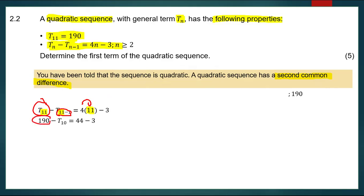Transposing 190 to the right-hand side gives negative 190, and 44 minus 3 gives 41. So negative t10 equals 41 minus 190, which gives negative 149. Dividing both sides by negative 1, t10 equals 149. That is the 10th term.